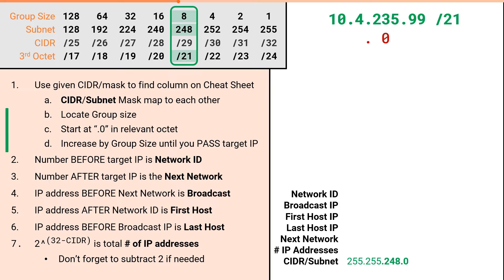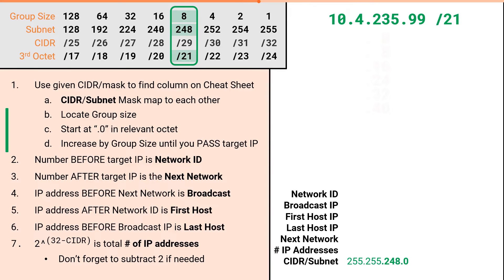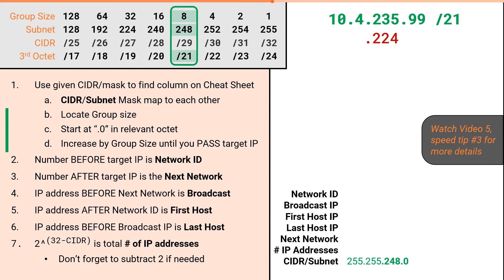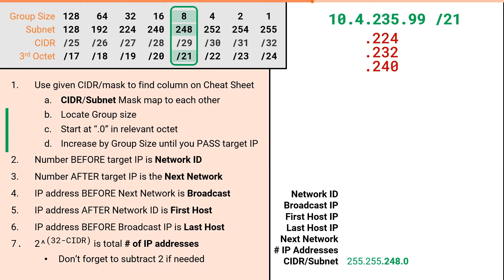So we would have .0, .8, .16, .24, .32 — and we could continue, but it would take a long time to get to 235. But remember all those speed tips we learned in video 5: we don't actually need to start at .0. We can just start at .224 and continue incrementing in sets of 8 from here, giving us .232, .240. At this point we've passed our target IP of 235 and we can stop. We can complete the remaining columns and simply fill in the attributes as we've done many times before.